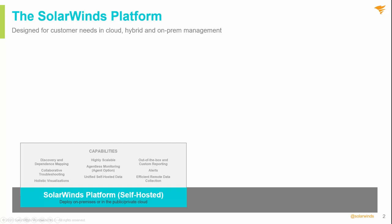First, we have the self-hosted component of the SolarWinds platform. This is an updated and expanded next-generation evolution of the platform that supports modules such as NPM and SAM. Much of the functionality from the Orion platform is still present in the new SolarWinds self-hosted platform. You still have discovery, mapping, alerts, reports, and centralized data and access control, just to name a few features.